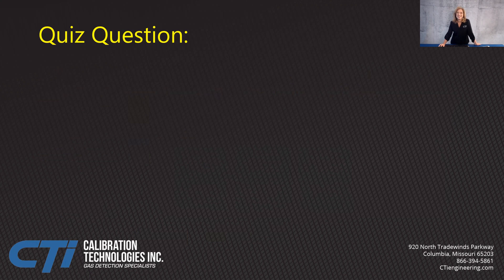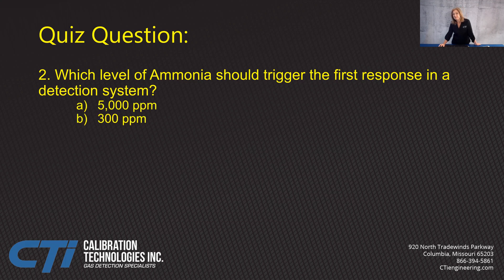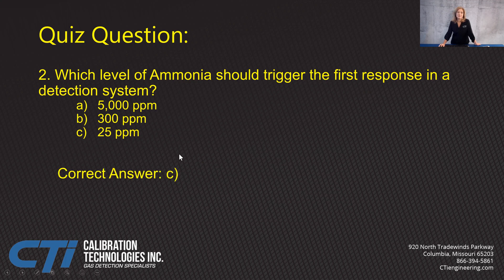Another quiz question: what level of ammonia requires a first response? Is it 5,000 ppm, 300 ppm, or 25 ppm? It's 25 ppm. Anything below 25 ppm, you don't have to signal any sort of alarm. That's the first level that IIAR notices. The correct answer is C.